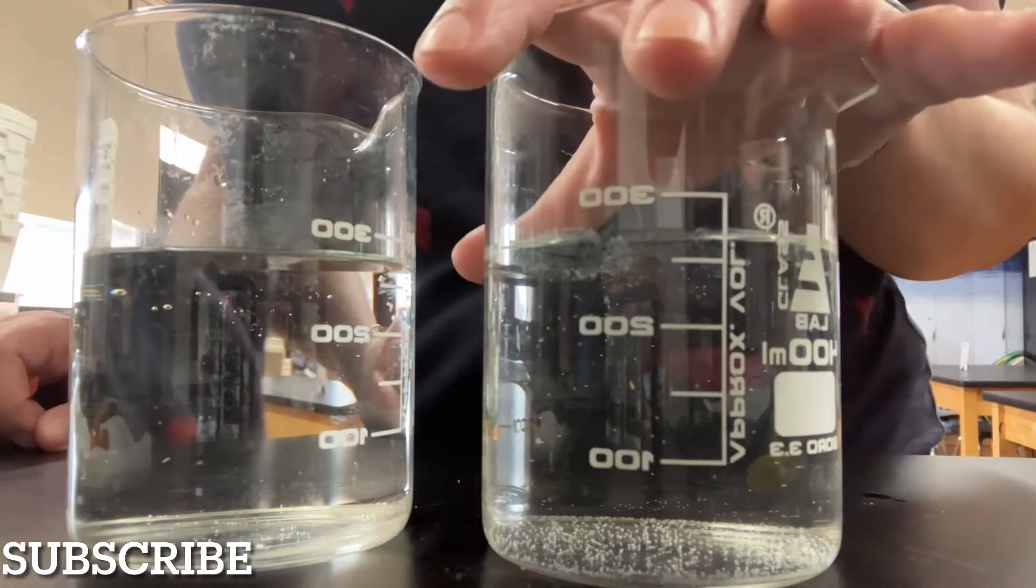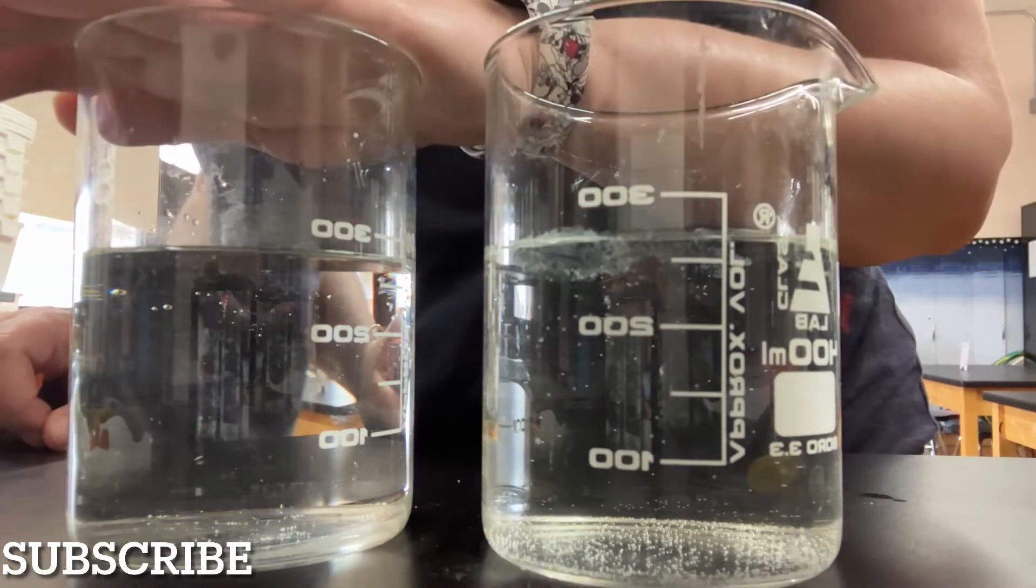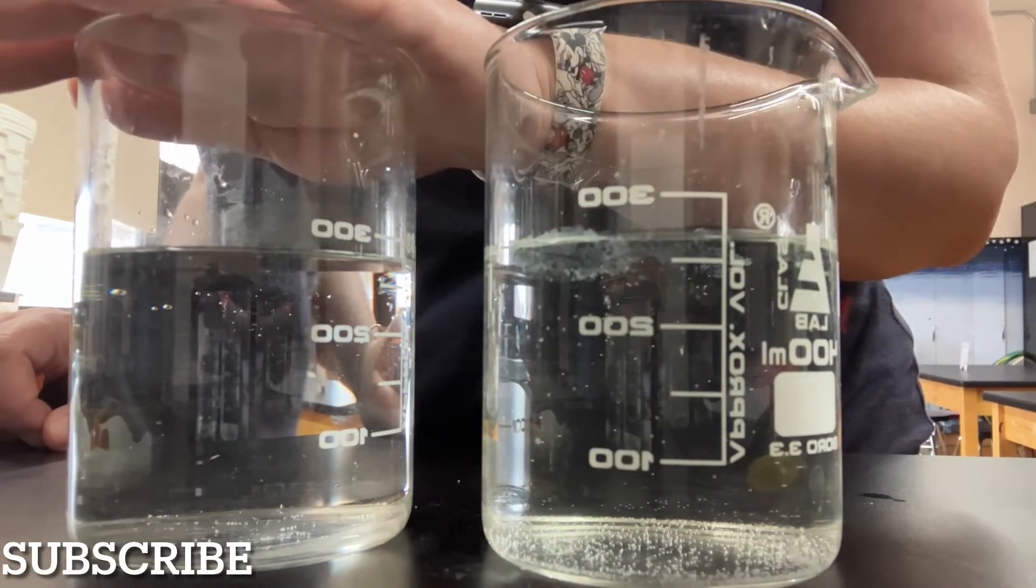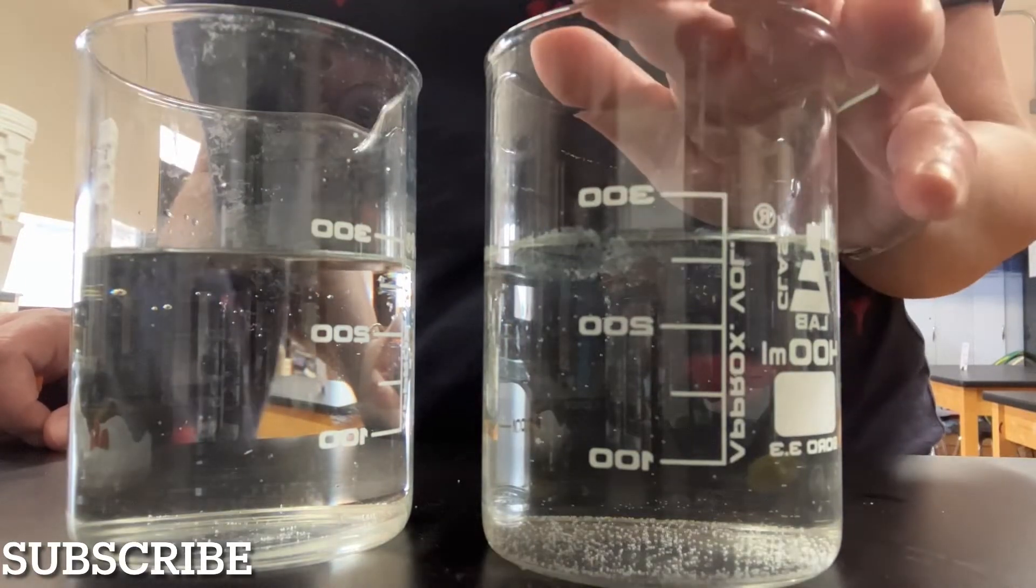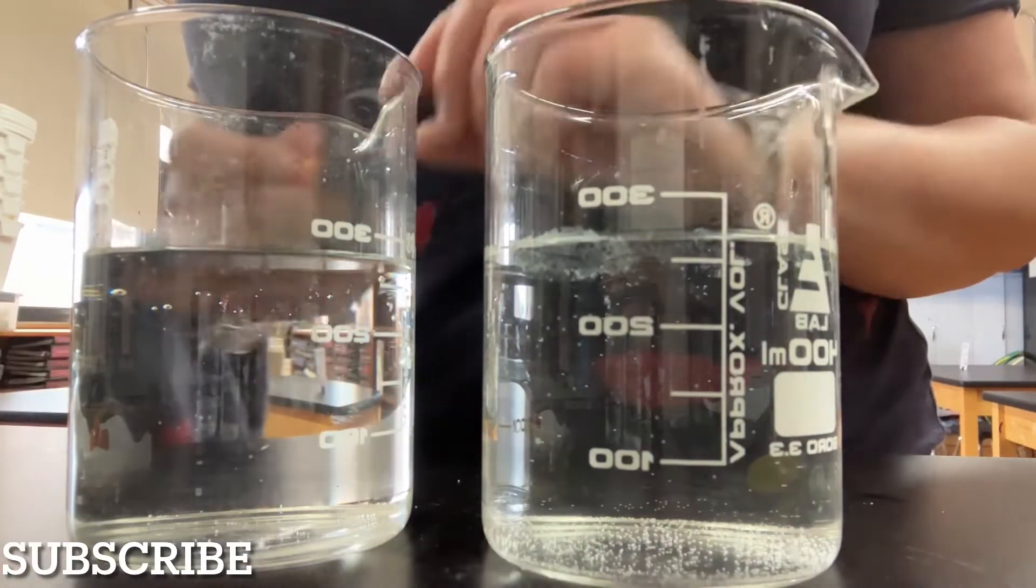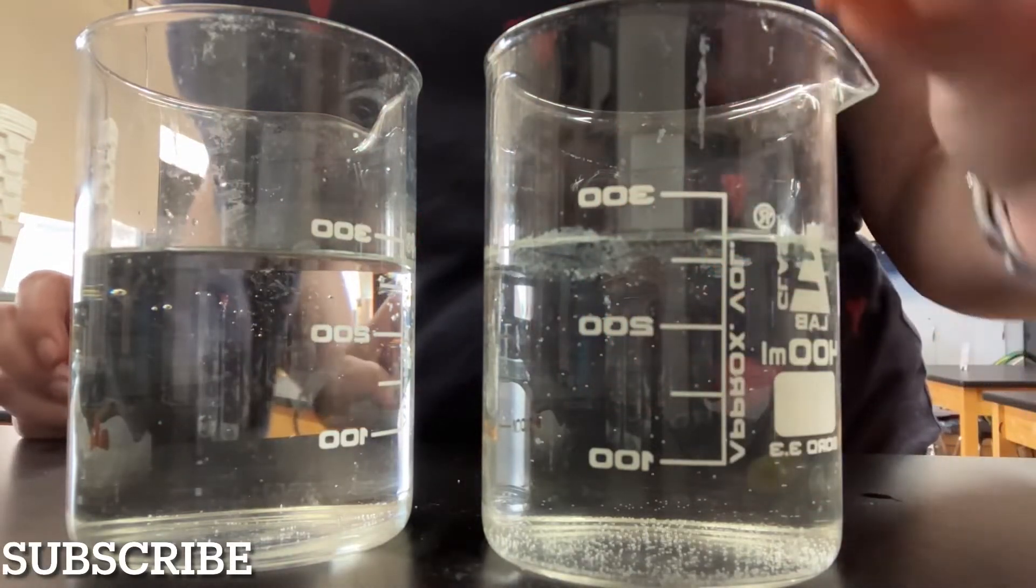In this container I have some water but this is not water in this container. This is hydrogen peroxide. So let's see what happens when we place this small piece of carrot into water.